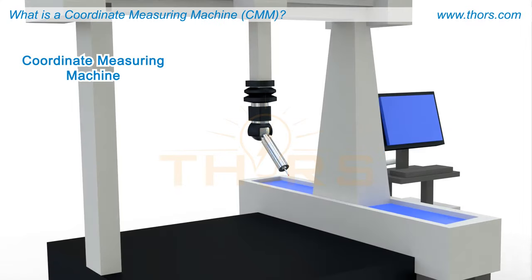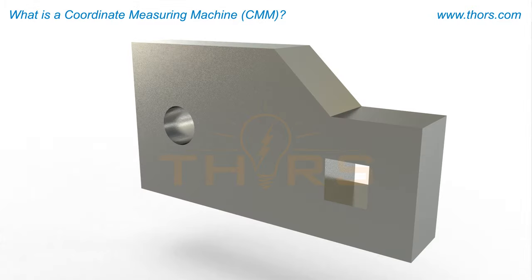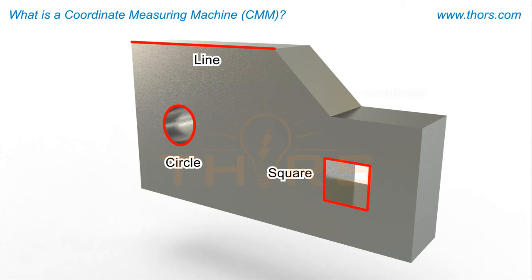A coordinate measuring machine, or CMM, is a device used to measure and report an object's geometric features, such as a circle, line, and square, as well as an object's angularity, circularity, and other geometric dimensioning and tolerancing, or GD&T, parameters.